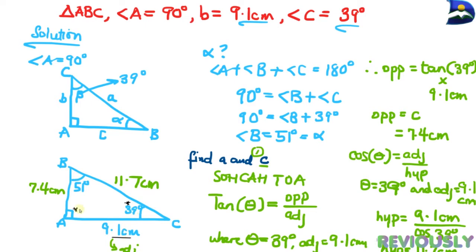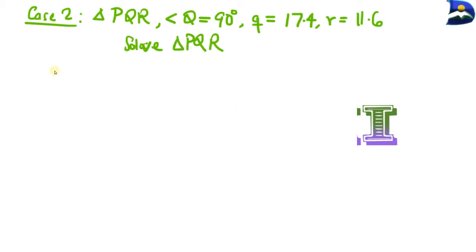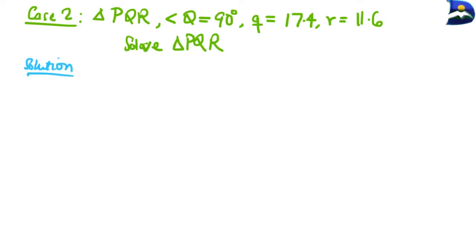Now we have Case 2, which I encourage you to try out. The question tells you that you are given a triangle where one angle is 90 degrees, a side relating to that angle is 17.4 units, and the other side is 11.6 units. Designing a triangle from just this information is tricky, but we can avoid the challenge by first recognizing that the largest angle possible is 90 degrees.